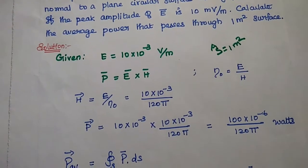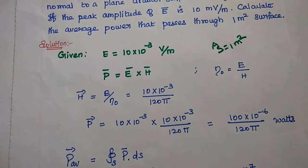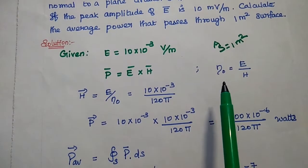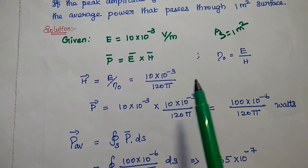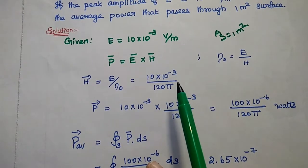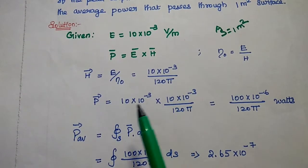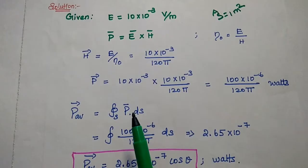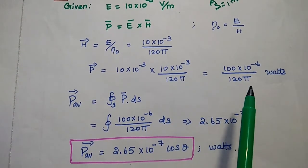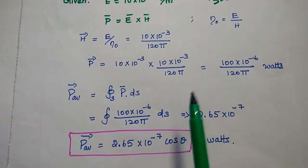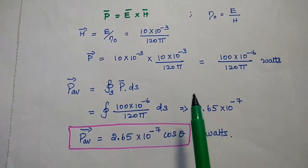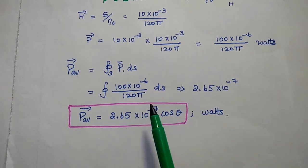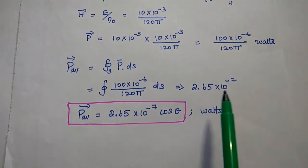To find the Poynting vector, P = E × H. Only E is given, so we need to find H. Using the relation η₀ = E/H, we get H = E/η₀ = (10 × 10⁻³)/125. Substituting E and H into the Poynting vector expression, we get P = 100 × 10⁻⁶ / 125 watts. Integrating over the surface of 1 m², the result is 2.65 × 10⁻⁷.